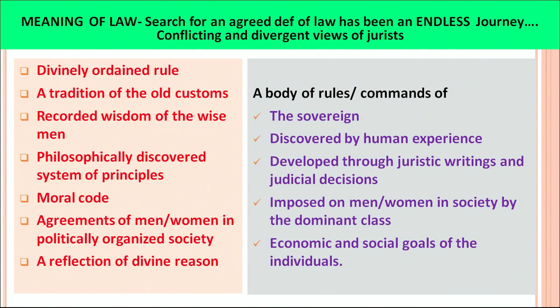There is no single agreed definition on which we can solely rely. Ideally, the term law can be considered a body of rules — commands of the sovereign, where sovereign means a person in authority, a supreme being. It can also be a body of rules discovered by human experience, developed through jurist writings and judicial decisions, imposed on men and women in society by the dominant class, and reflecting the economic and social goals of the individual. So law is given by the sovereign, discovered by human experience, based on jurist writing and judicial decisions, or it has economic and social goals.